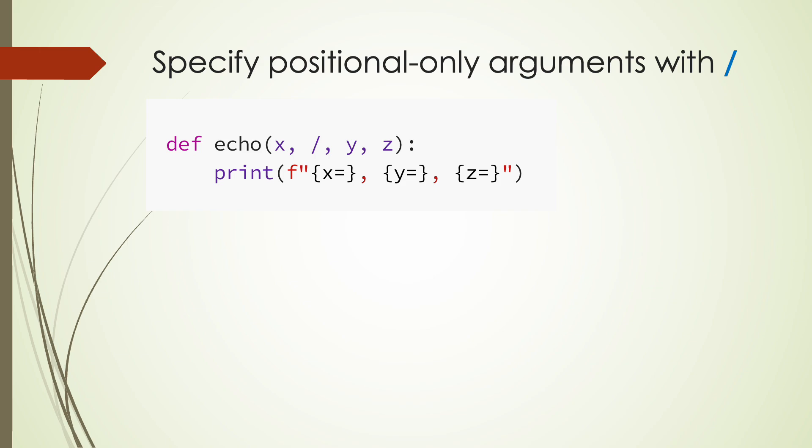In Python, arguments placed before the slash symbol in the function definition must be passed as positional arguments. Let's update the echo function to use a slash to separate the arguments. With this update, x can only be passed as a positional argument, while y and z can still be passed as both positional and keyword arguments.